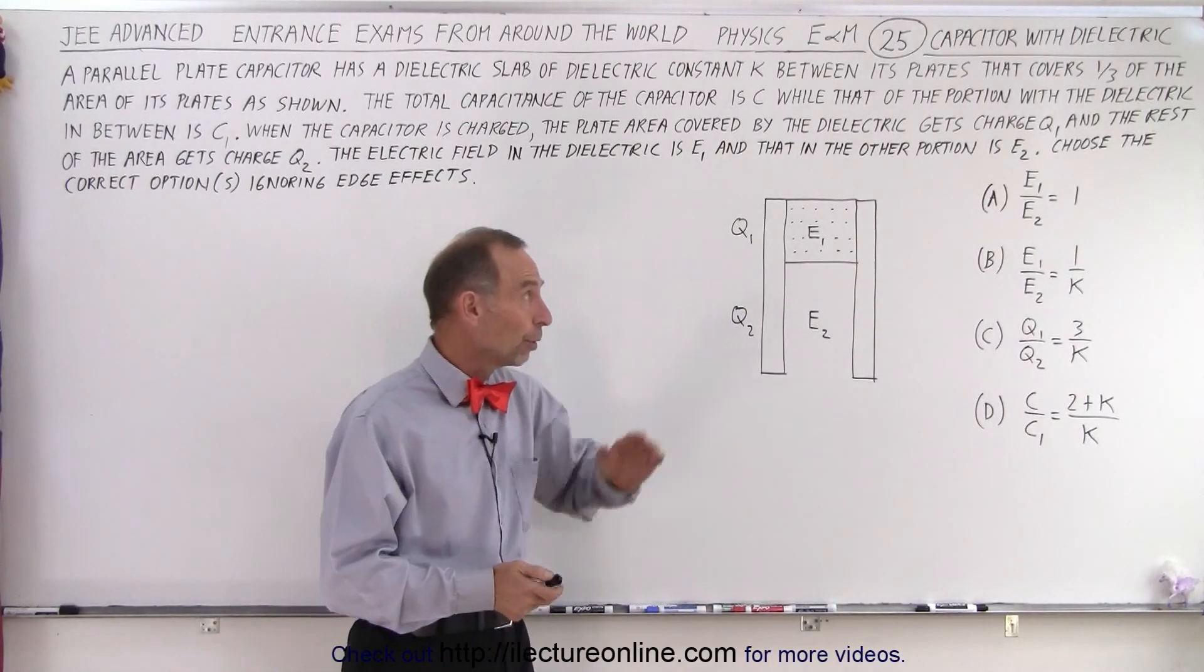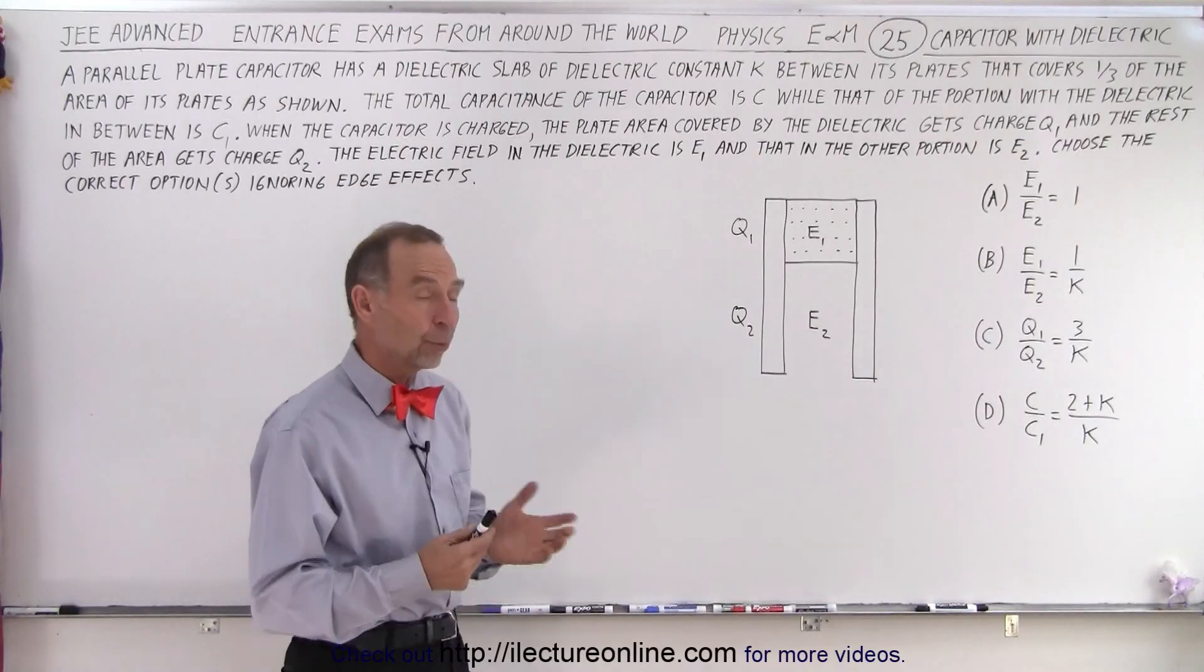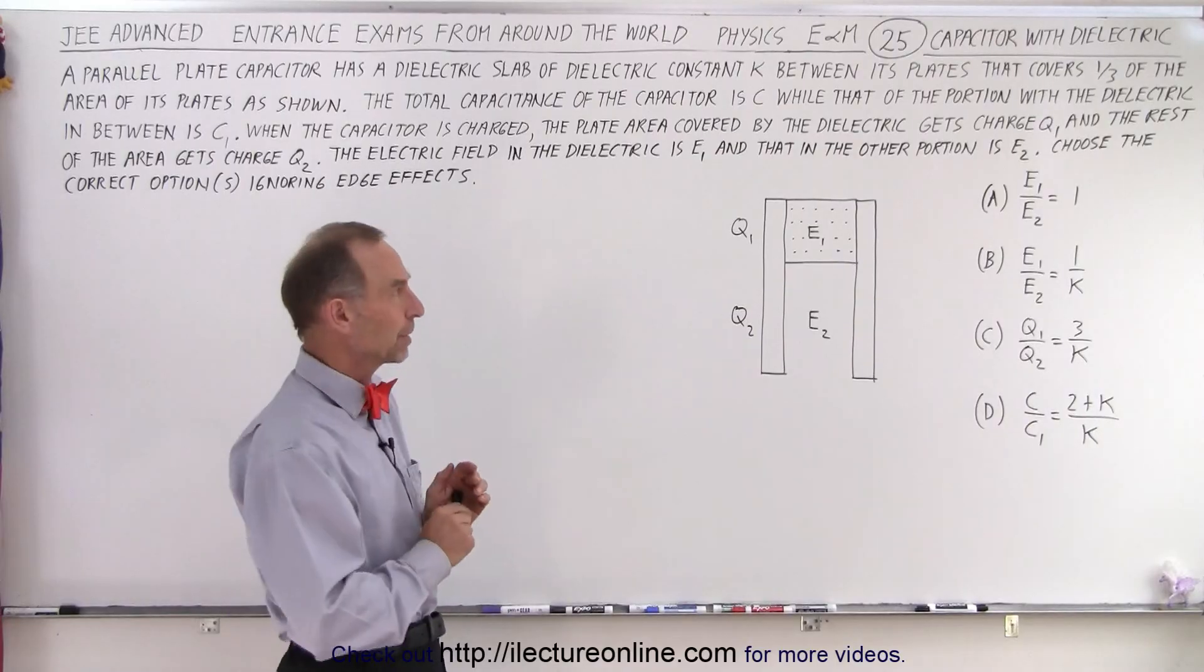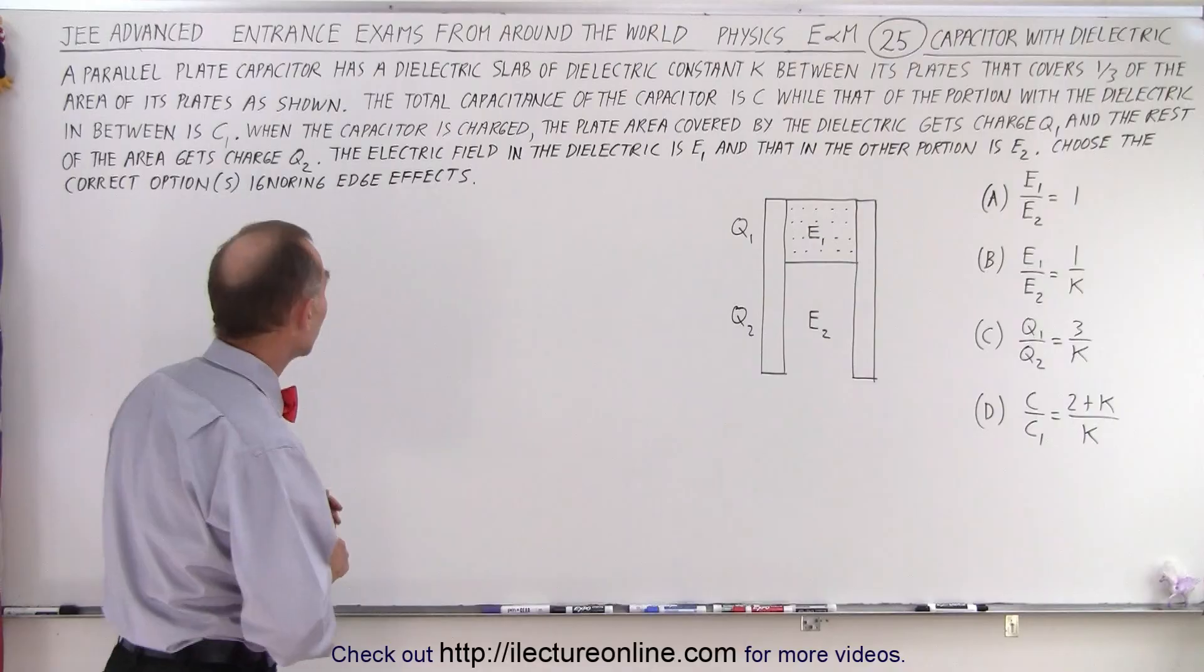And then ask four particular ratios and which ones of those are correct. It could be one, could be all, at least one must be correct. Alright, let's read the problem.